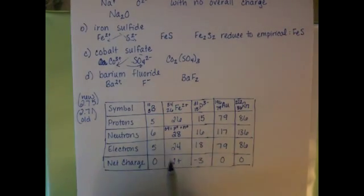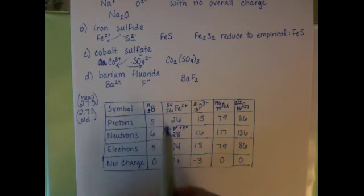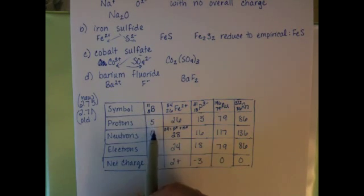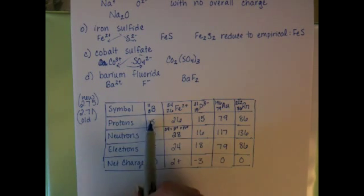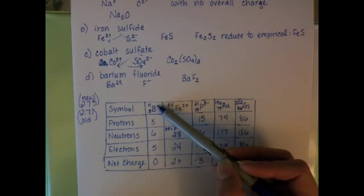So to review that, the mass number is the sum of the protons plus neutrons. The net charge is the difference between the protons and the electrons, and it's written in the upper right corner.